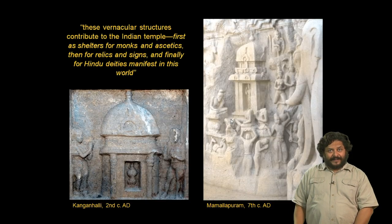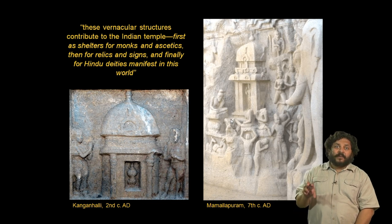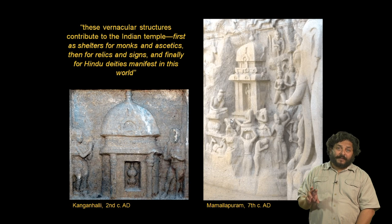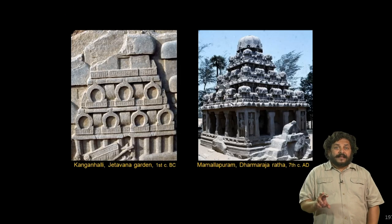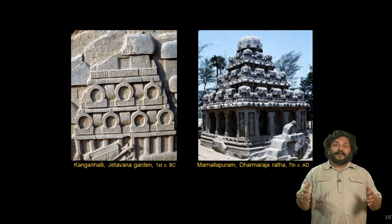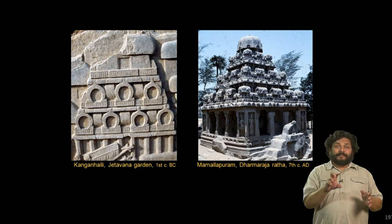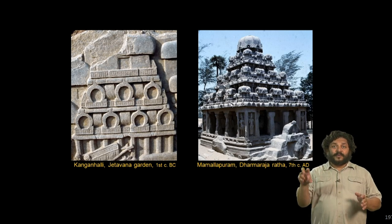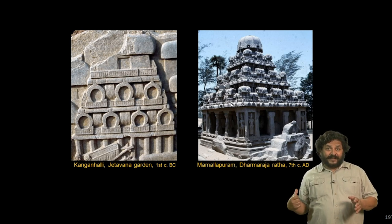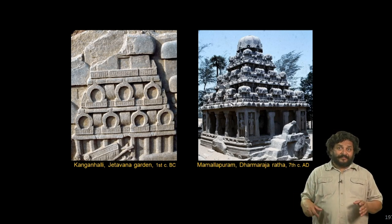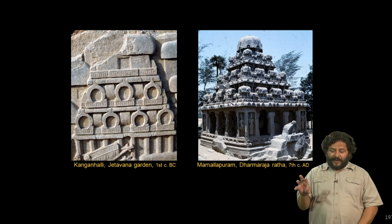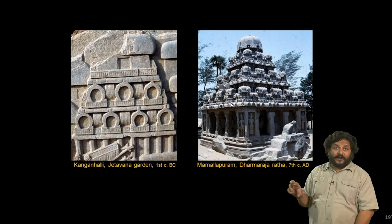Kutina temples or South Indian temples are built of simple modules of edicules. This simple hut that we saw is the module that makes up the spire of the South Indian temple. Seen in Buddhist reliefs at Kanganhali in the 2nd century BC to depict a mansion for the Buddha, a multi-storied palace built out of simple hut-like edicules, the square ones being called Kutas and the longitudinal ones being called Shalas.